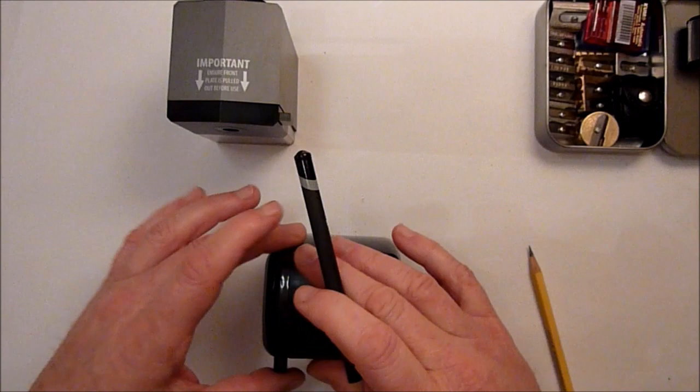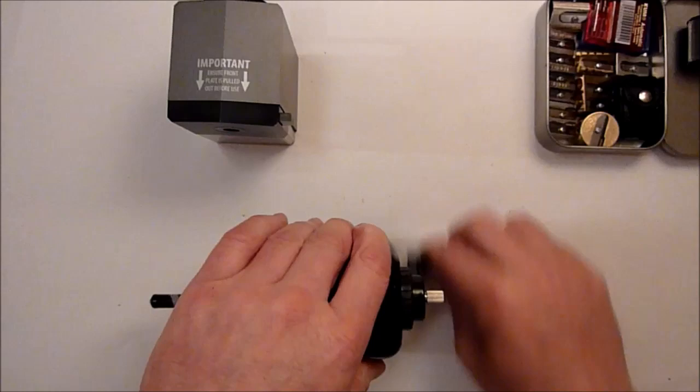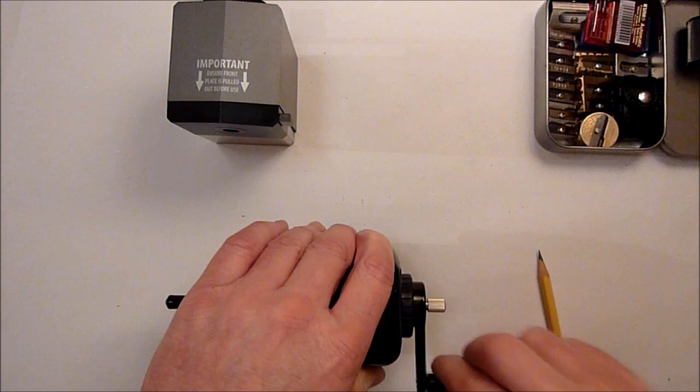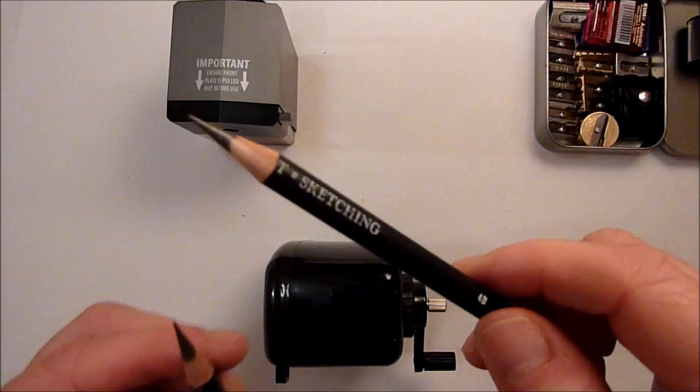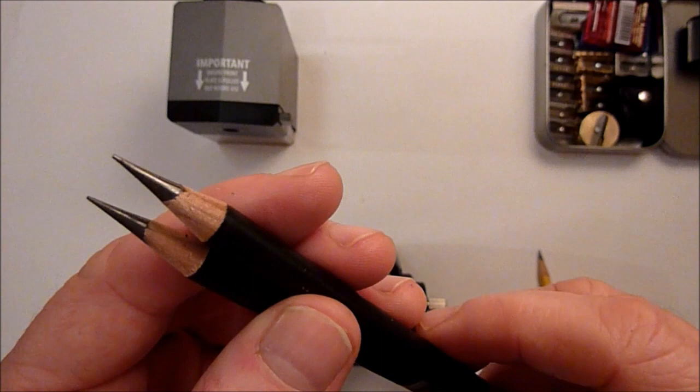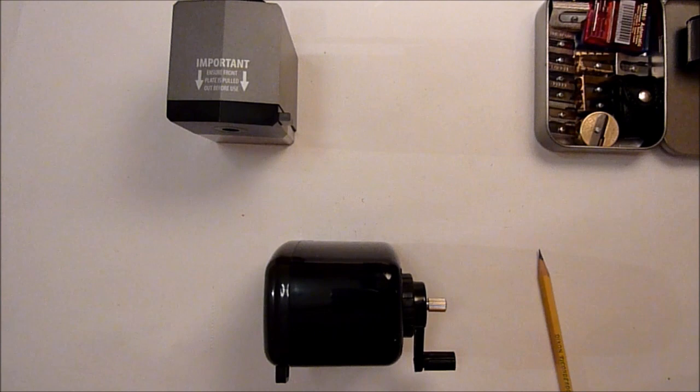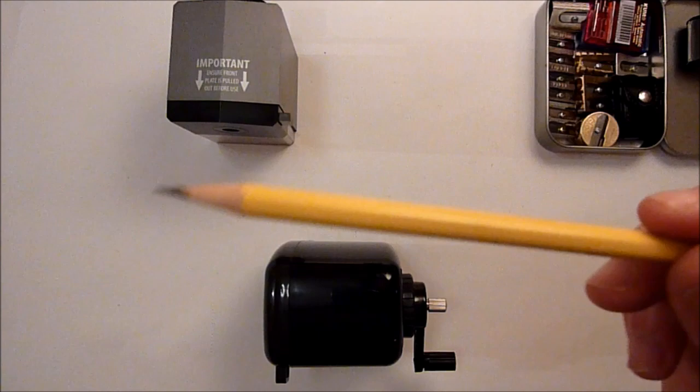I'll do the larger sized Derwent sketching pencil, which is a round barrel. And there we go. Again, that's a really, really nice point. Compare that to the Swordfish. This one here is a Swordfish. There's not much in it really, is there? Virtually identical. And they both give you a very nice, I wouldn't call it a long point, but it's a long regular point, a very decent regular point, let's say.